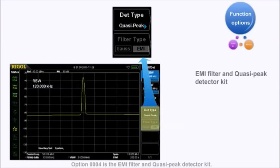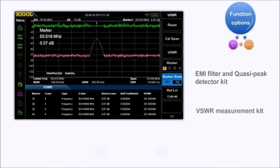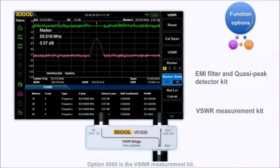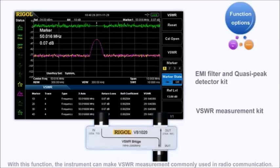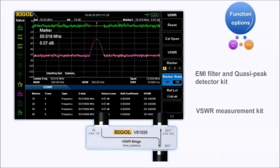Option four is the EMI filter and quasi-peak detector kit. With this function, the spectrum analyzer can perform many advanced EMI tests. Option five is the VSWR measurement kit. With this function, the instrument can make VSWR measurements commonly used in radio communication.